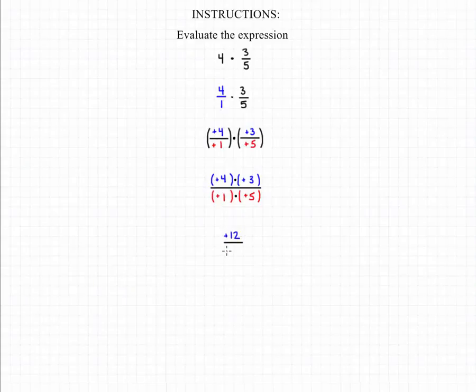That will give us positive 12 over a positive 5, which will give us 12 over 5, which is our final answer.